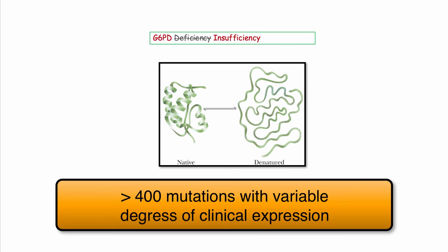Let's start with the term insufficiency. In your readings, this is really called G6PD deficiency, but I like to call it insufficiency to reflect on the ranges of phenotypic expression. This is not an all-or-nothing. The degree of residual enzyme activity determines the clinical severity. Some patients experience minor, subclinical manifestations, whereas others suffer a full-blown, life-threatening hemolytic anemia.